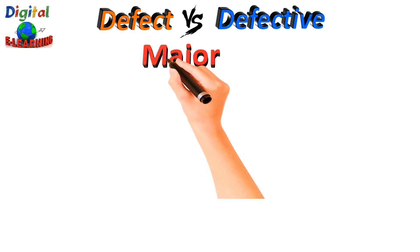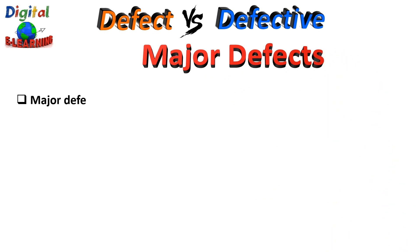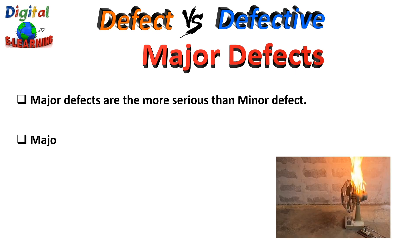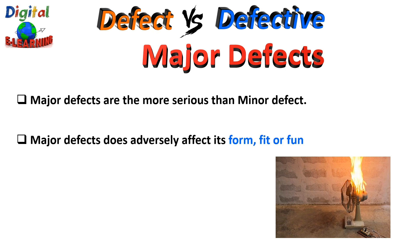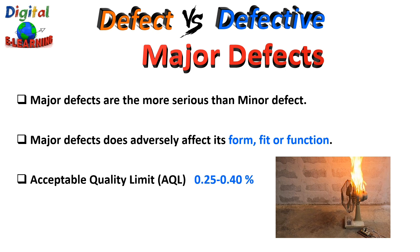Major defects are more serious than minor defects but less severe than critical defects. Major defects could affect the fit, form, and functionality of a product. A major defect is one that is likely to result in failure or reduce the material usability of a product for its intended use. These defects are readily noticeable by customers, and detection would cause a customer to return the product, launch a complaint, or request a refund. They normally have an AQL of 0.25 to 0.4 percent.